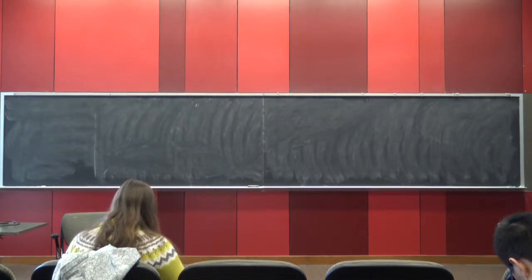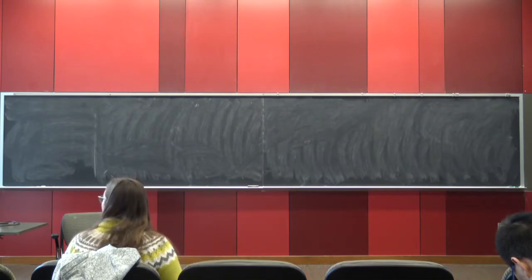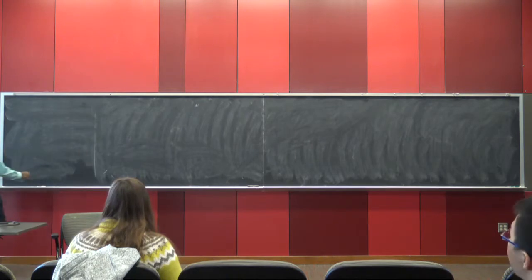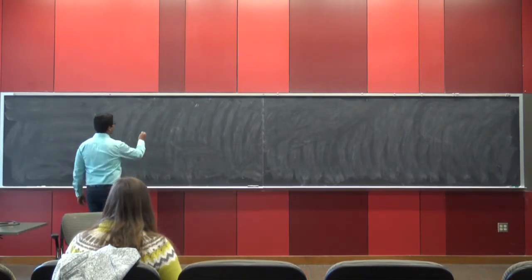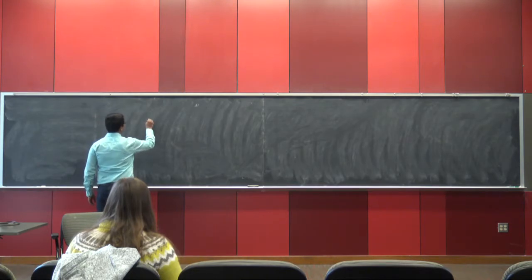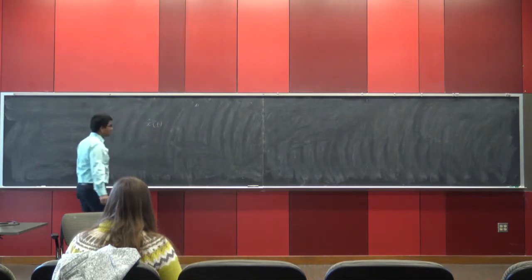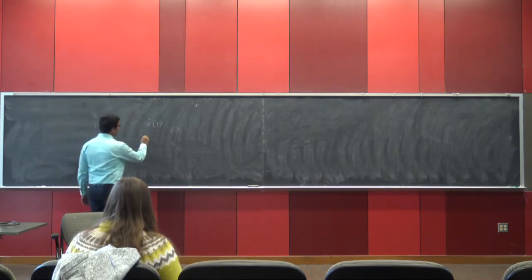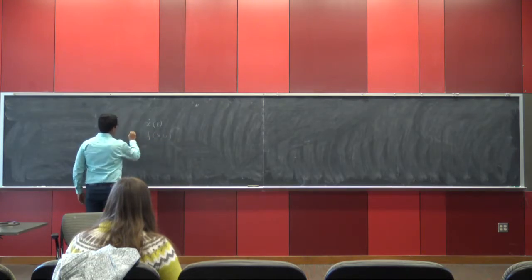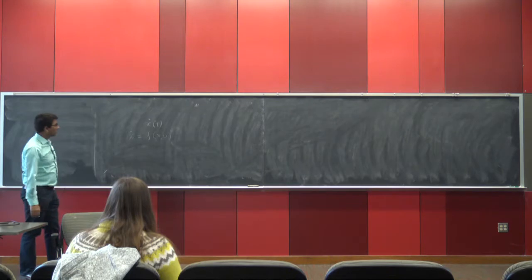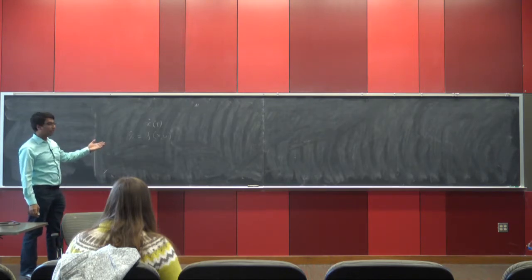I have a few comments about the notation. Many people have made this mistake — I have mentioned it time and again, but I have to mention it again. When you write x-dot, you have to write it as a function of time. When you write x-dot equals f(u), it doesn't mean anything.